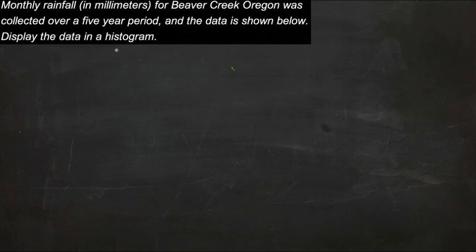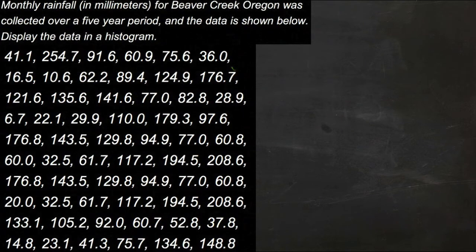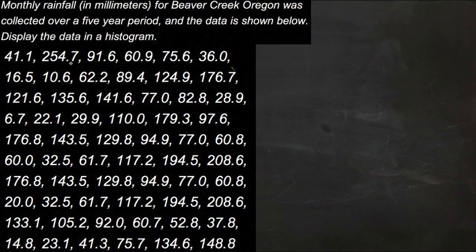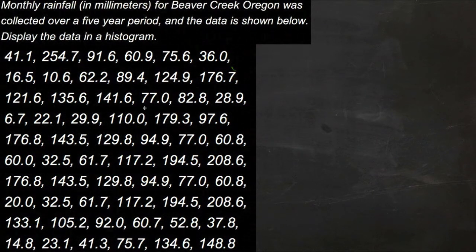Now actually, we could just write the numbers down — why would we need to bother putting it into a graph? We could just look at the numbers to see what the data looks like, right? Well, let's see what the data looks like if it's put into just a list. We have 41.1 millimeters one month, and 254.7 the next month, and 91.6 the next month, and so on. There's a lot of data here, but it doesn't really mean much of anything — it's just a series of numbers all crammed together.